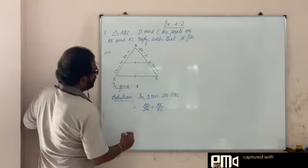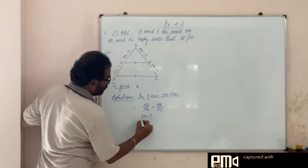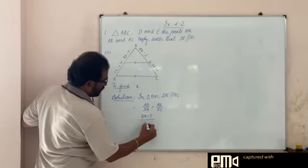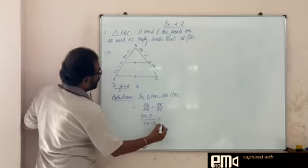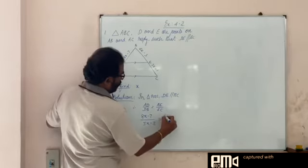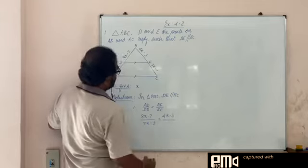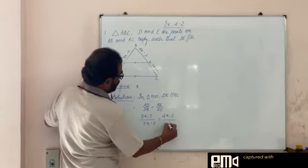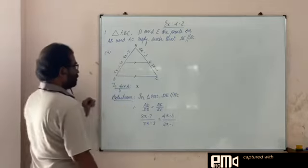What is AD? 8x minus 7 divided by DB, 5x minus 3, equals AE, 4x minus 3, divided by EC, 3x minus 1.